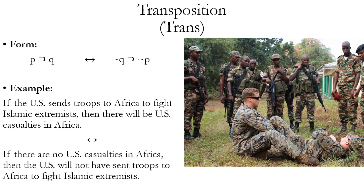So the antecedent, if it switches with the consequent, both the antecedent and the consequent have to either gain a negation or lose a negation. If you only have a case where the antecedent or the consequent only has the negation, then in order to use this rule, you will add a negation to each side. So you're always either adding a negation to both sides or subtracting a negation from both sides.